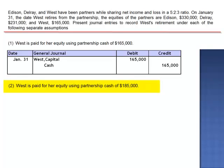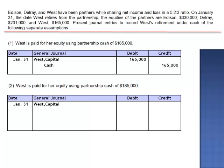Assumption 2. West is paid for her equity using partnership cash of $185,000. If the assets of the partnership are going to decrease by $185,000, the equity must also decrease by the same amount. We know that West's capital account will decrease by $165,000, bringing her capital balance to zero, and cash will be credited for $185,000. Which means the remaining partners, Edison and Del Rey, must be debited for a total of $20,000.